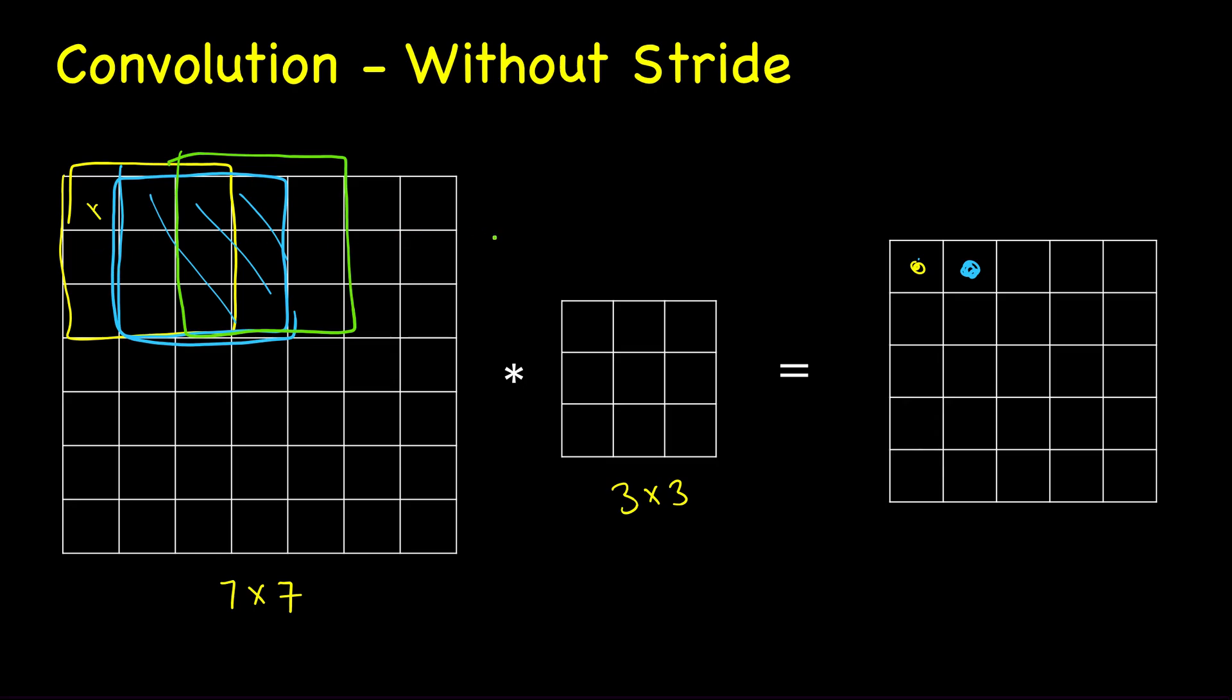And then again we shift by one this green value and so on. Similarly, when we are done with all these values we shift down by one. So this is the default.